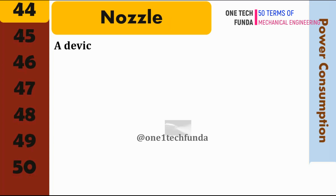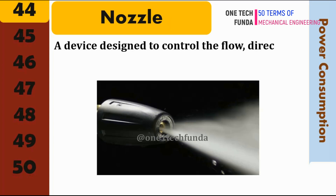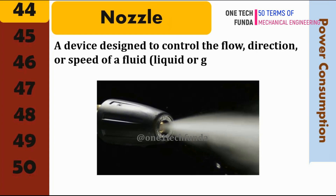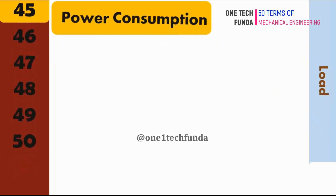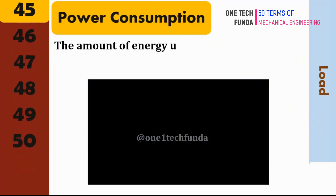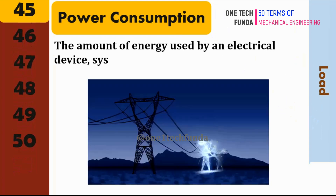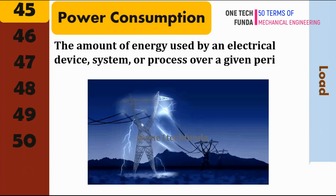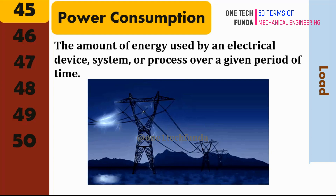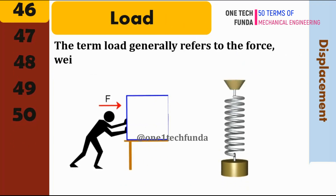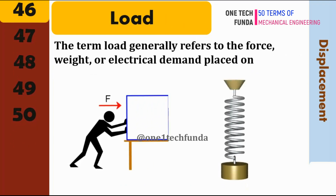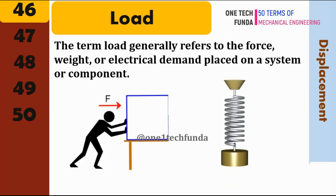Nozzle: a device designed to control the flow, direction, or speed of a fluid, liquid, or gas. Power Consumption: refers to the amount of energy used by an electrical device, system, or process over a given period of time. Load: in mechanical and electrical engineering, the term load generally refers to the force, weight, or electrical demand placed on a system or component.